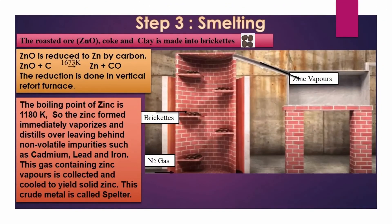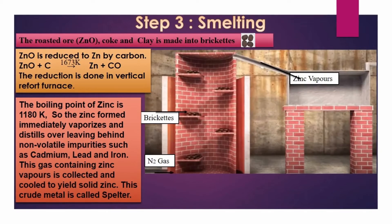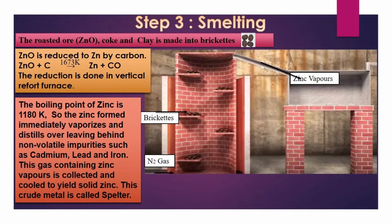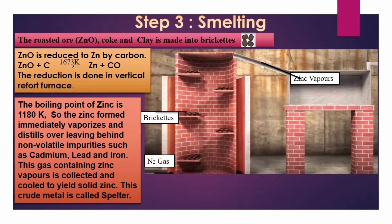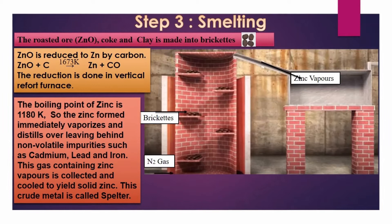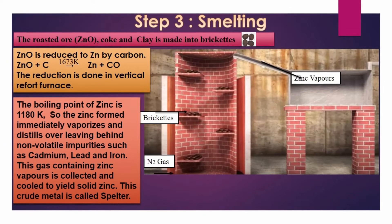The last step involved in the extraction of zinc is the reduction of zinc oxide to metallic zinc, i.e. smelting. Zinc oxide obtained during roasting is mixed with coke and clay and made into small briquets.